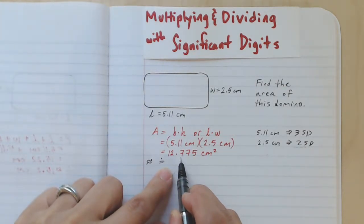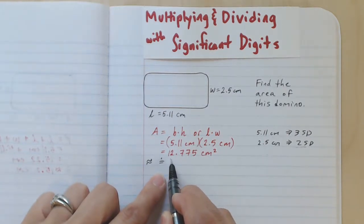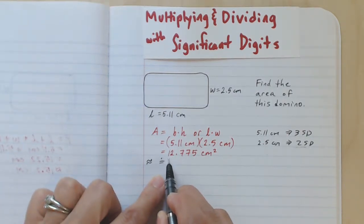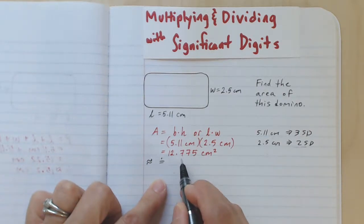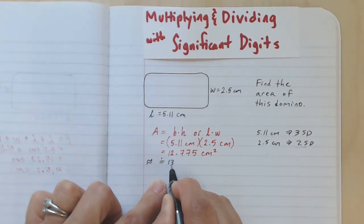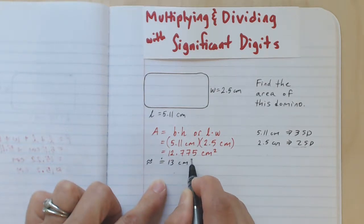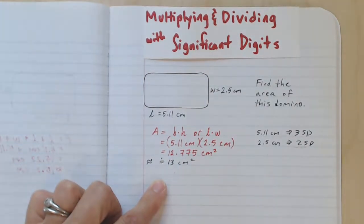So we're going to have to use these digits here, .775, and use them to round this number to two significant digits. So the question is, do we keep it 12 or do we round it up to 13? And you know the rounding rules are going to have us round this up to 13 centimeters squared. Two significant digits in the answer.